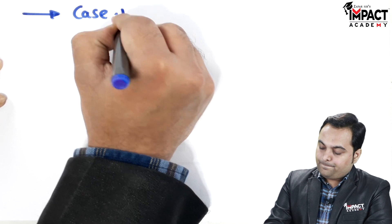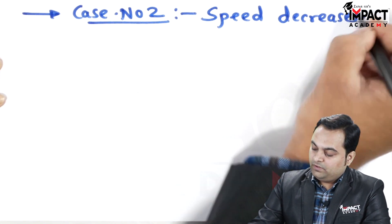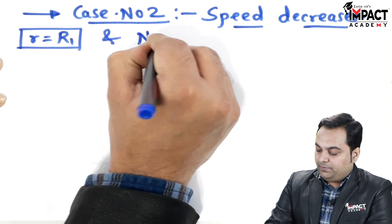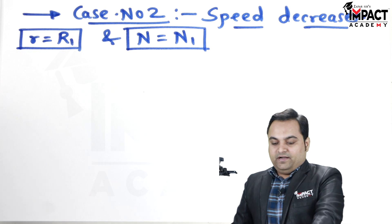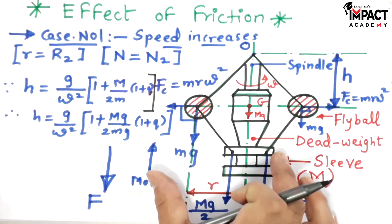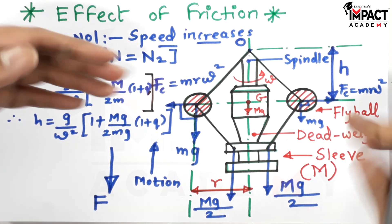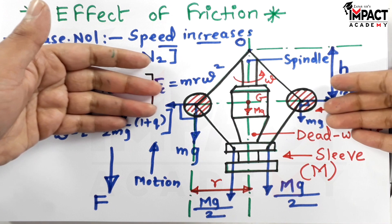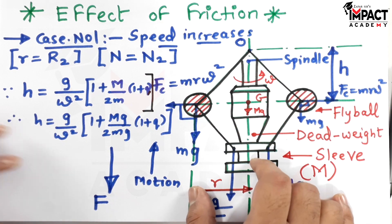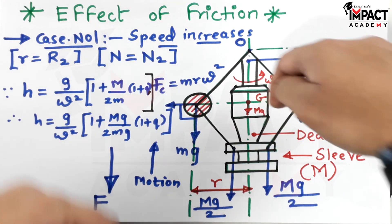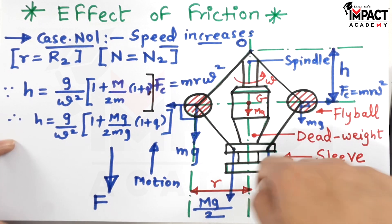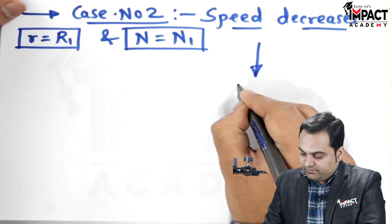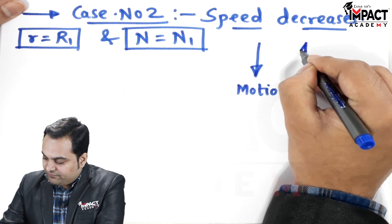Similarly, Case 2 is when the speed of the governor decreases. When speed decreases, the radius becomes R1 and the speed is N1 at radius R1. When speed decreases, centrifugal force decreases, so the fly balls move inward, reducing the radius. As the fly balls move inside, the sleeve moves downward.